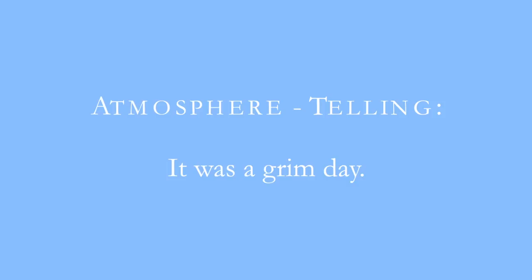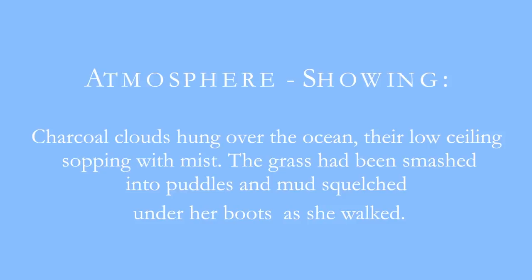We can also apply this to atmosphere, similar to setting. An example of telling with atmosphere would just be stating what the vibe is — "it was a grim day." Whereas if we were showing that, it would go something like: "Charcoal clouds hung over the ocean, their low ceilings sopping with mist. The grass had been smashed into puddles and mud squelched under her boots as she walked."